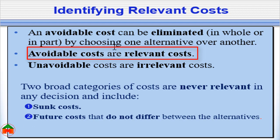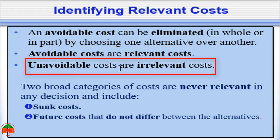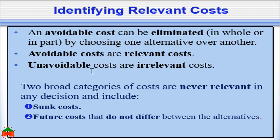The cost which can be avoided by choosing one alternative over another is known as avoidable cost, and avoidable cost is also known as relevant cost. On the other hand, all other costs are known as unavoidable costs. In doing differential analysis we should consider only the avoidable or relevant costs, and we should not consider unavoidable or irrelevant costs.